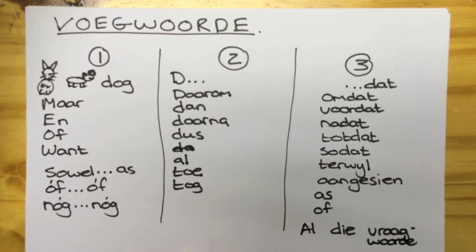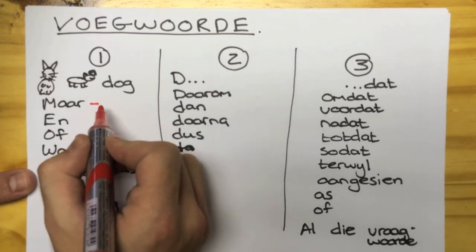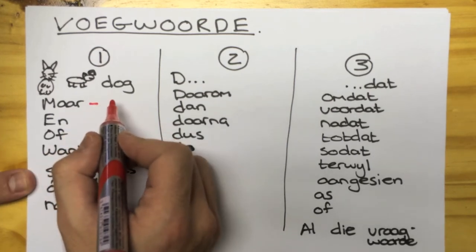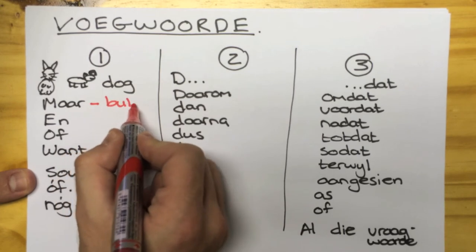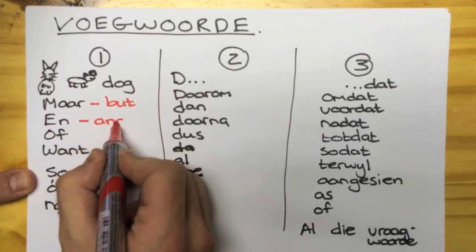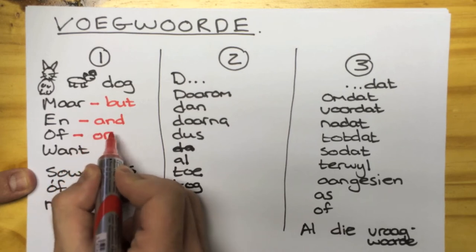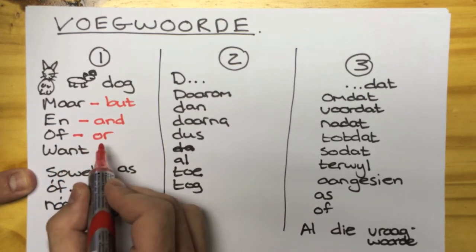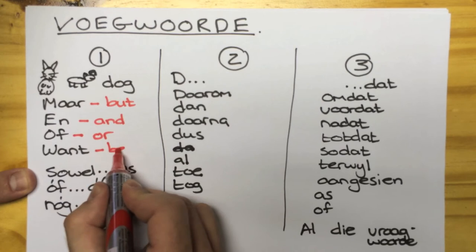Please note that all question words belong to group 3 conjunctions. Let's go quickly through all the English translations so that you know what they mean. Maar — but; en — and; of — or; want means because.